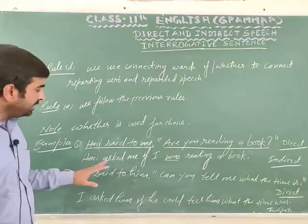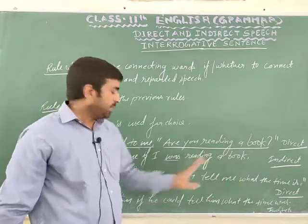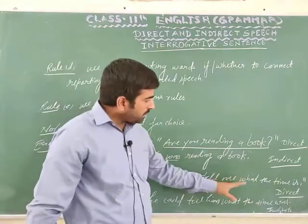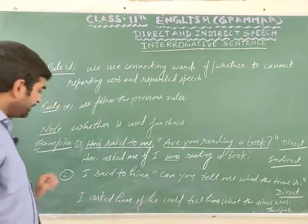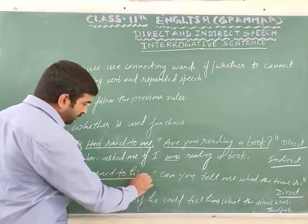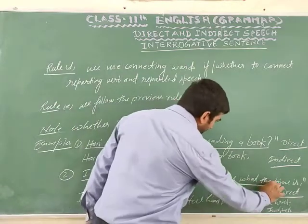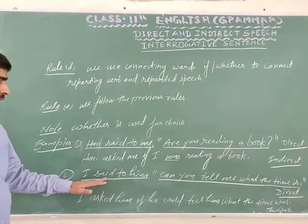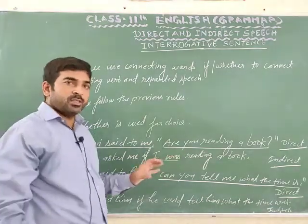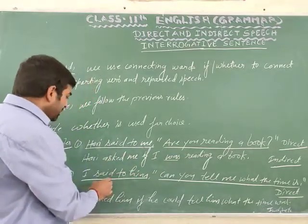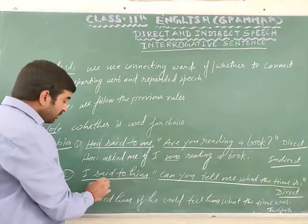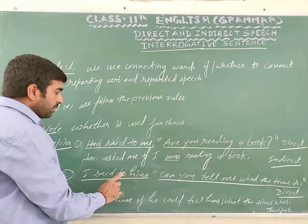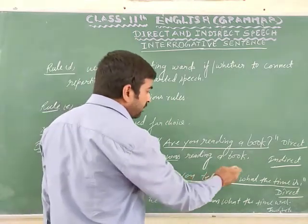Second example: 'I said to him, can you tell me what the time is?' Here 'I said to him' is the reporting verb in past tense, and 'can you tell me what the time is' is the reported speech. The reporting verb changes to 'asked', so: I asked him.